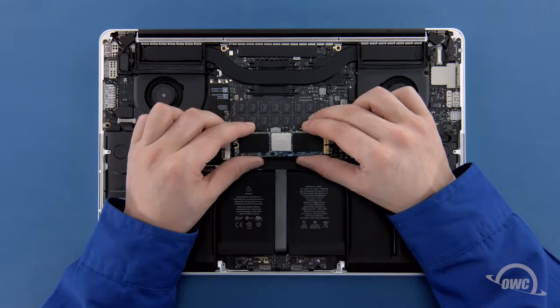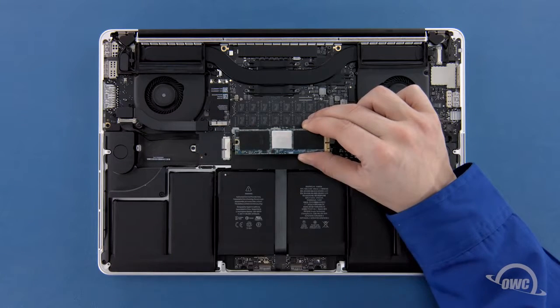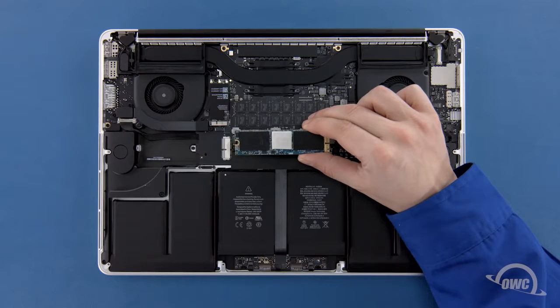Depending on the model Aura SSD you have, there may be a heat sink or thermal pad on it, though this may vary in size, shape, and positioning. If your SSD has a heat sink or thermal pad, it's very important that you do not move or remove it or else you risk damaging the Aura, and possibly your MacBook Pro.